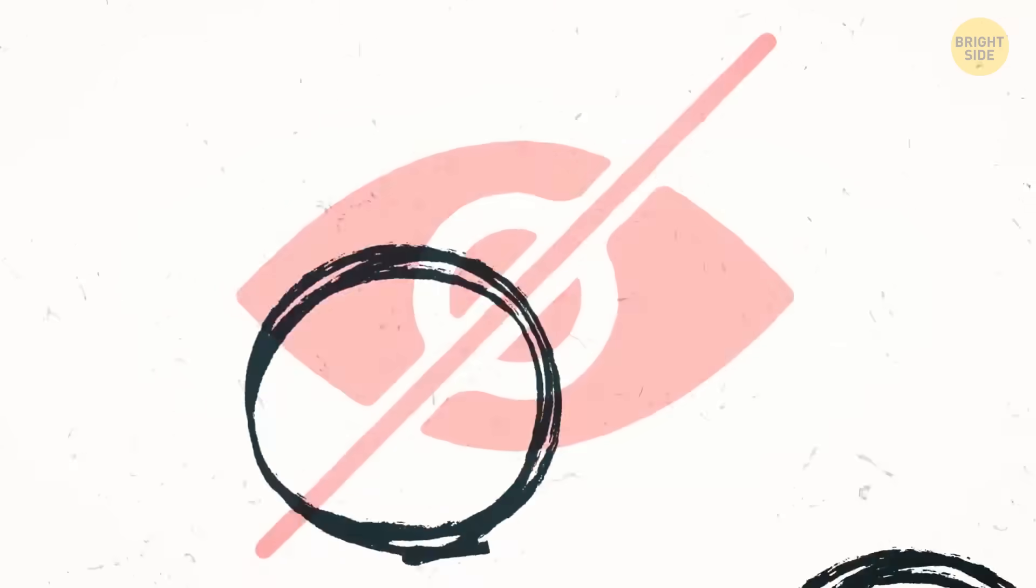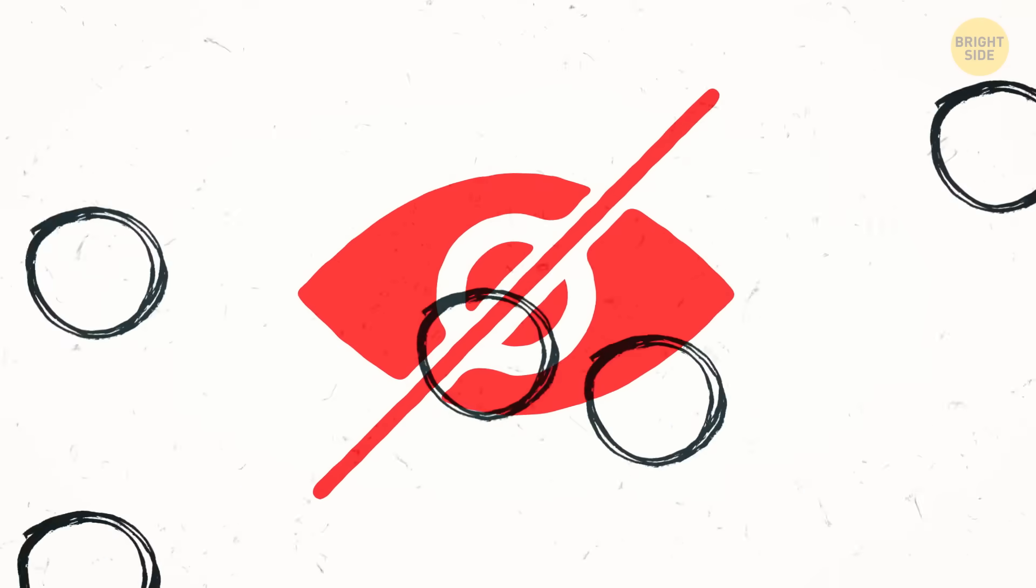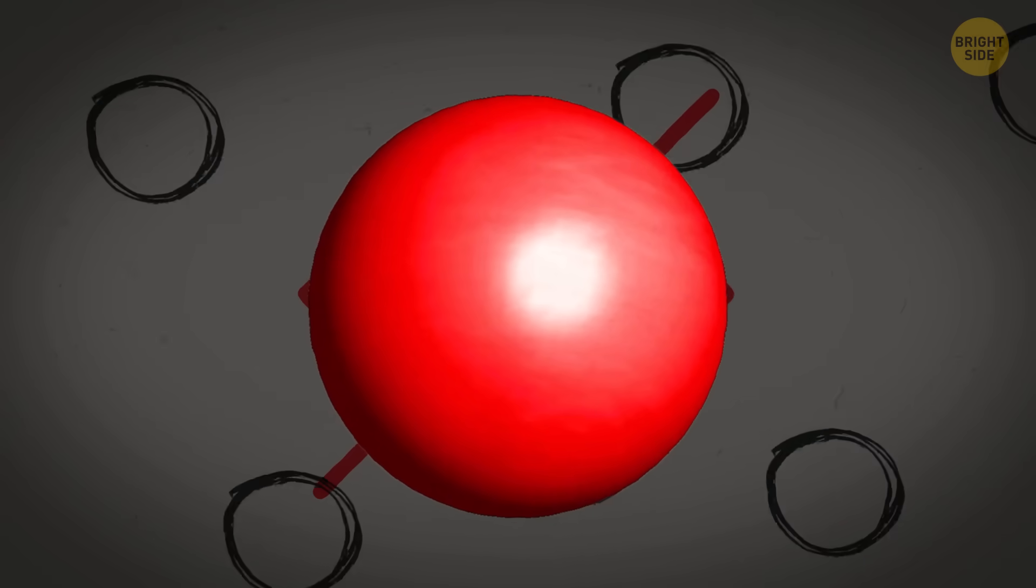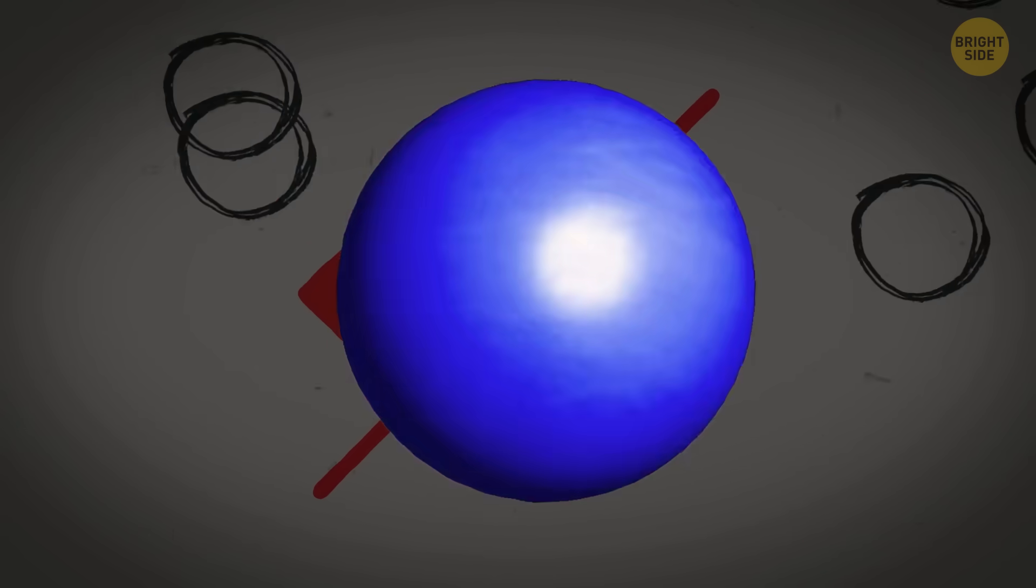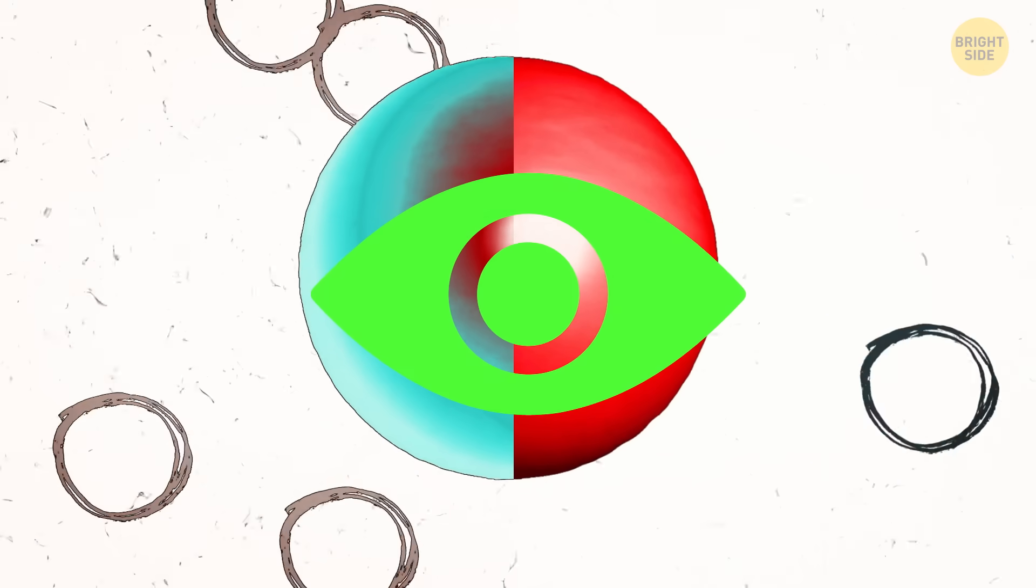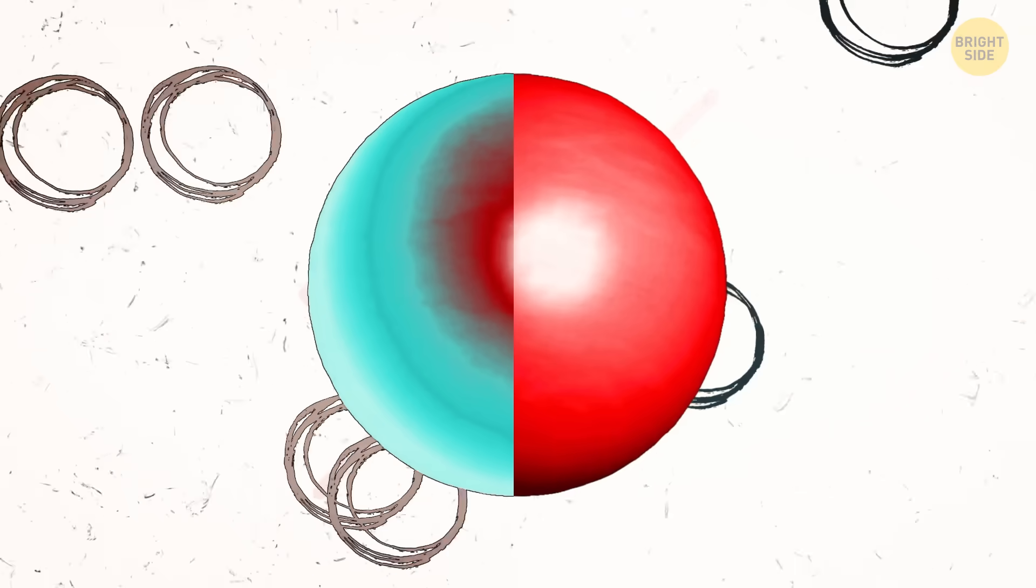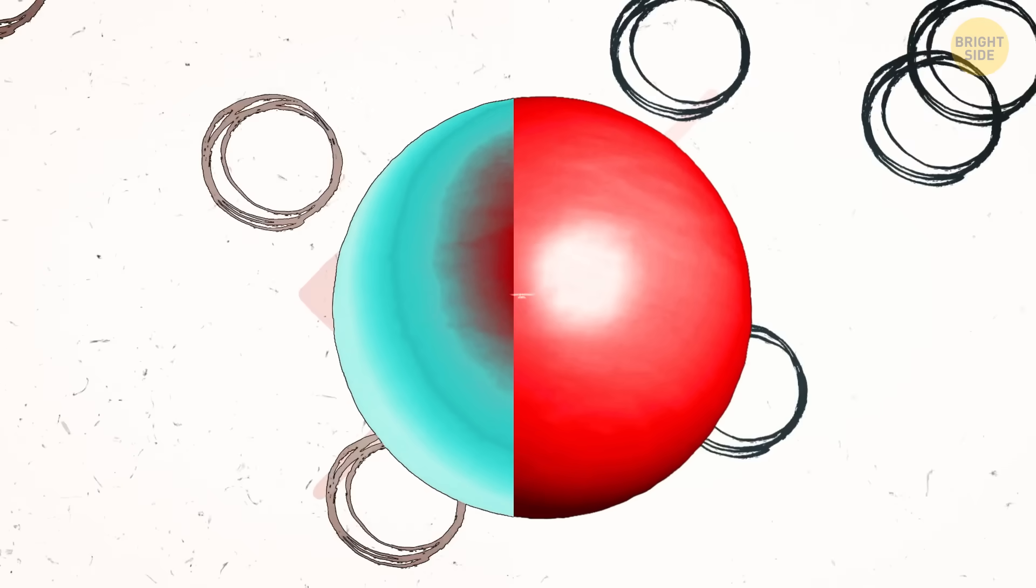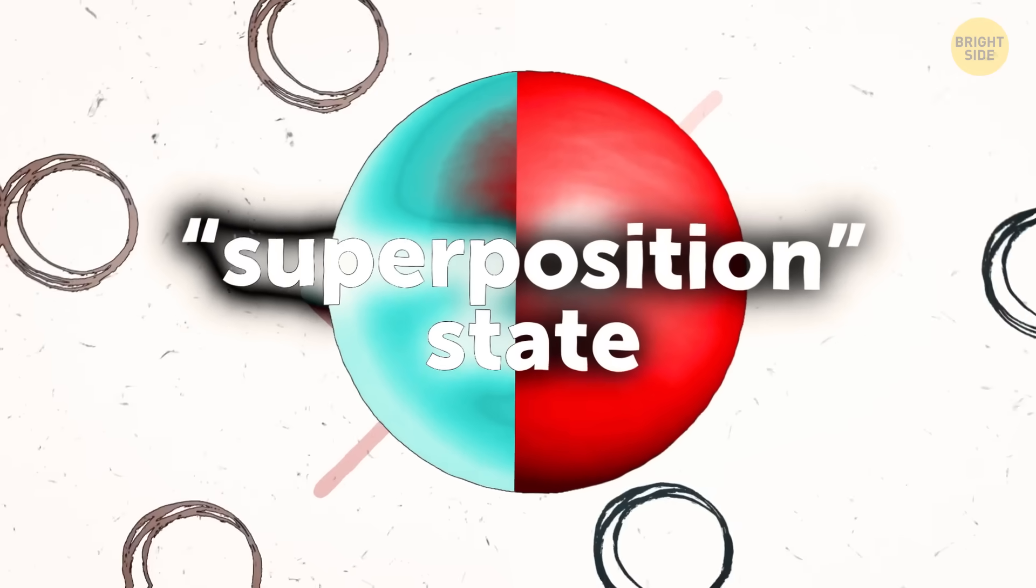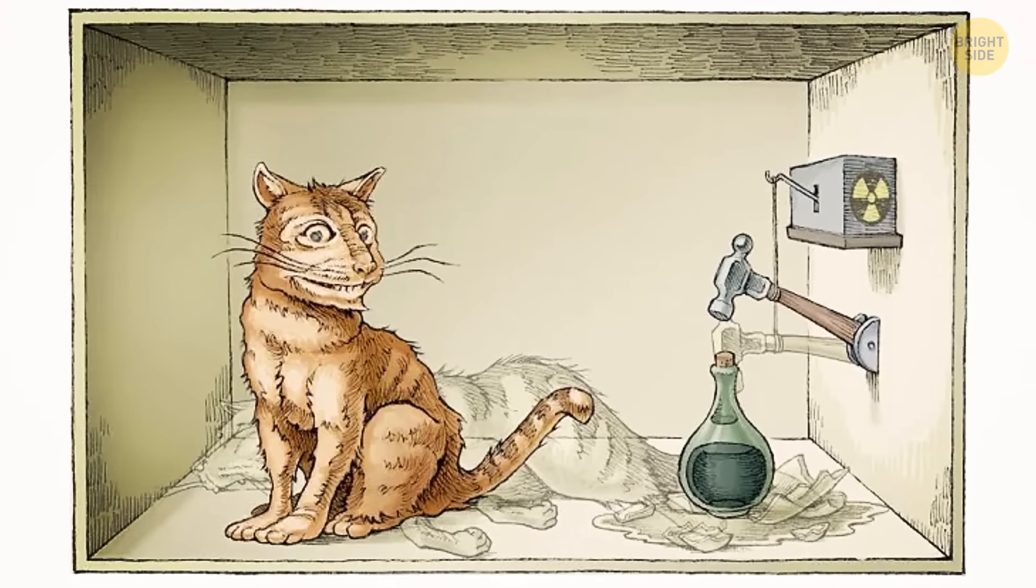It would work like this. Before observation, particles exist in all possible states at once. Kind of like a ball could be both blue and red at the same time, until we look at it. When we do, the universe suddenly splits in two. In one of them, the ball is blue, and in another, it's red. This is called the superposition state, like with poor Schrödinger's cat, who is both alive and not in his little box.